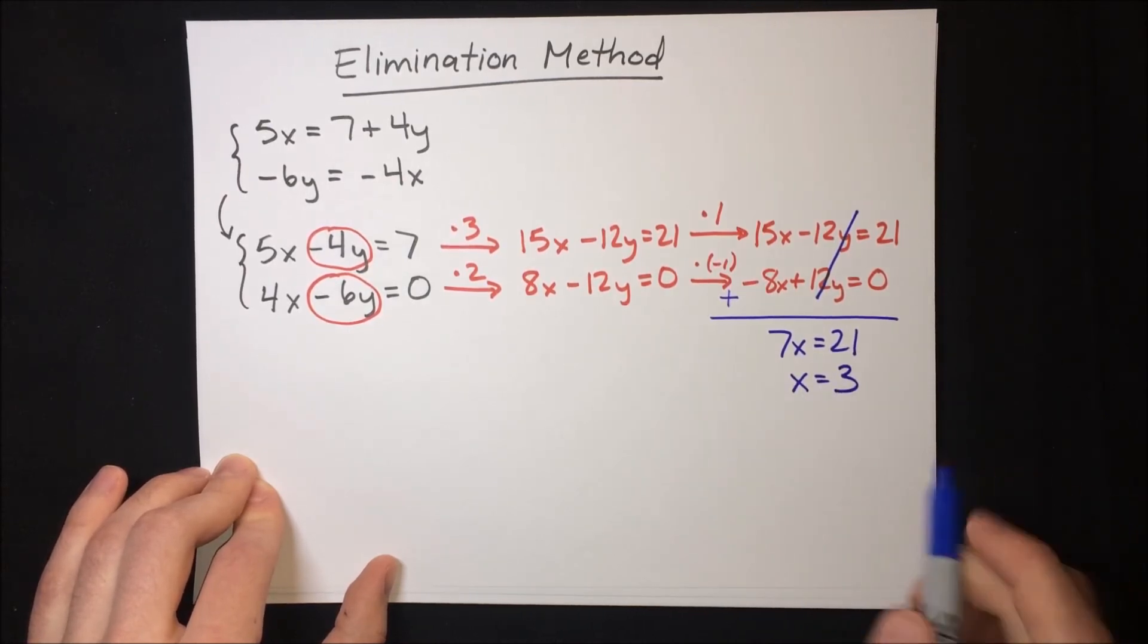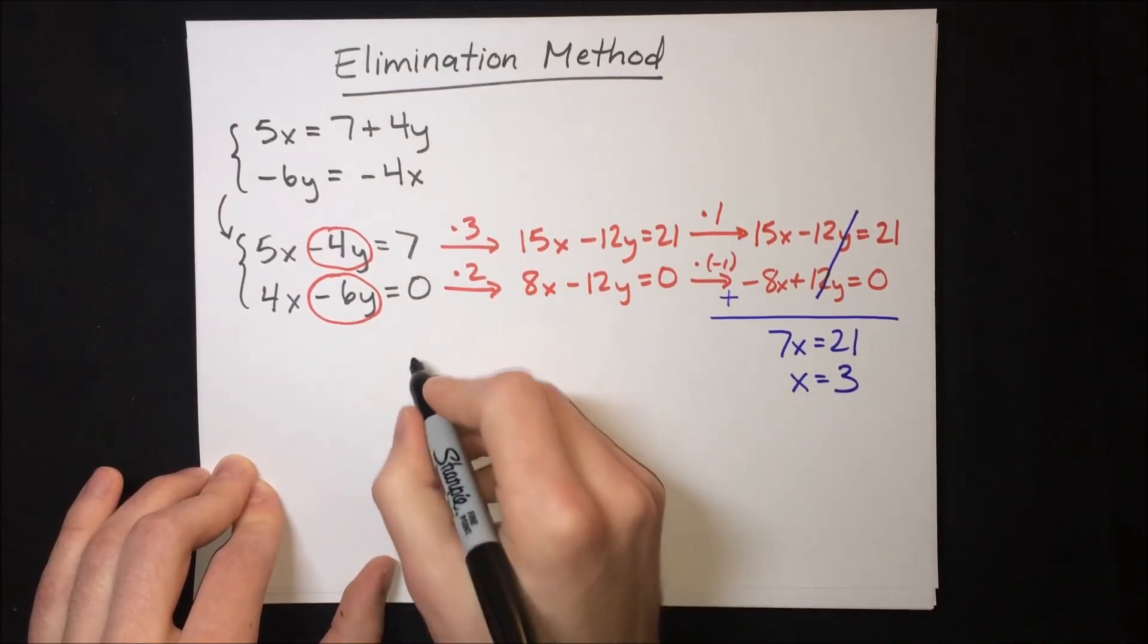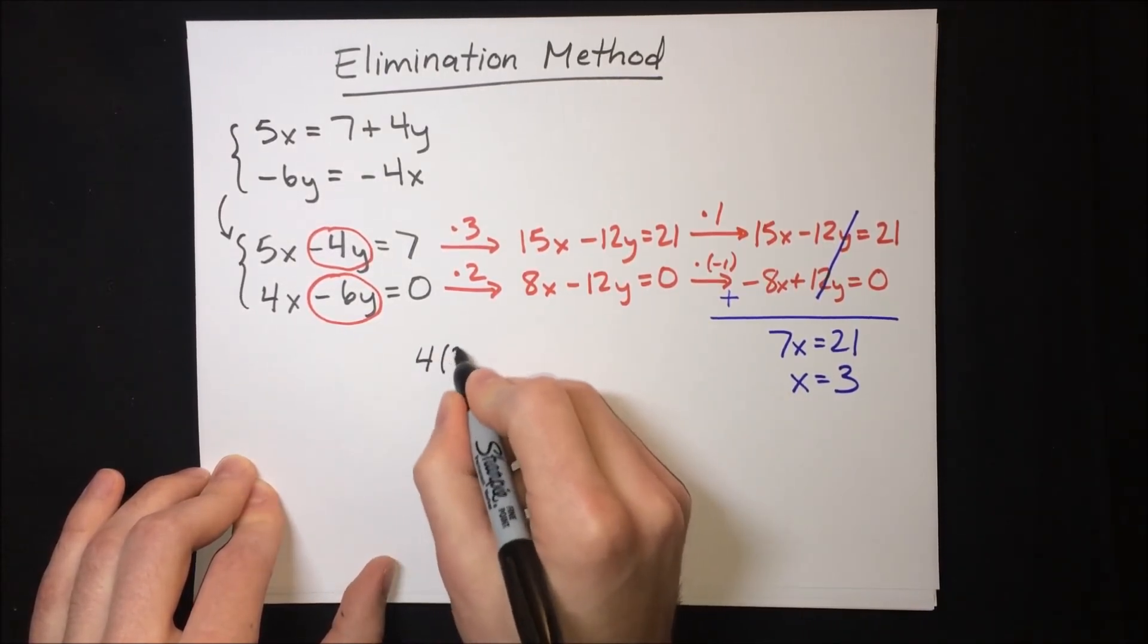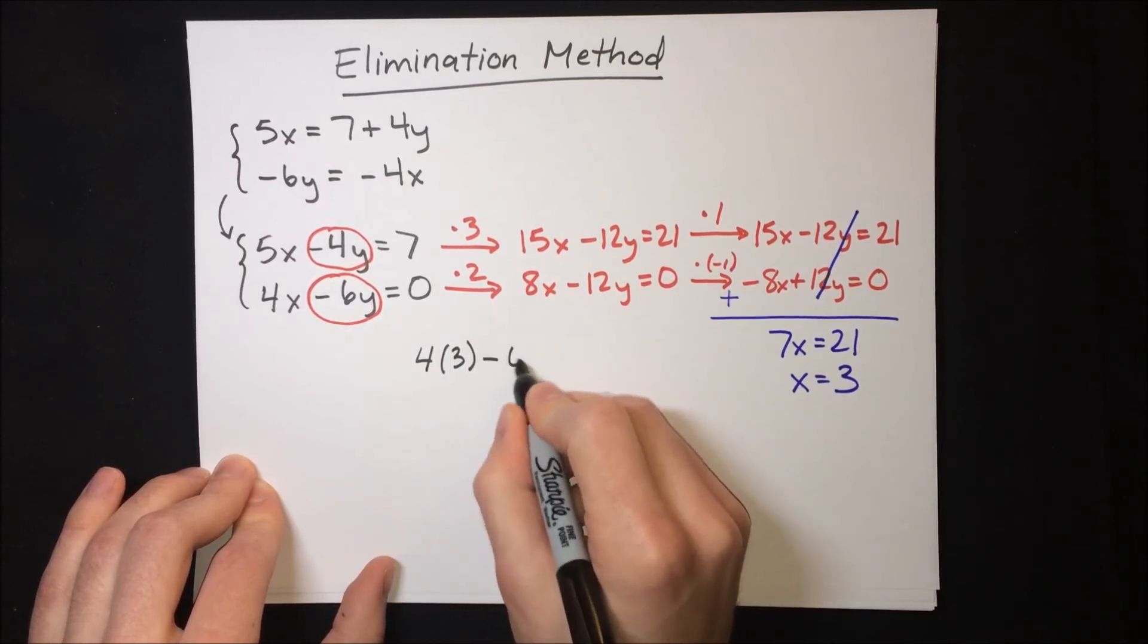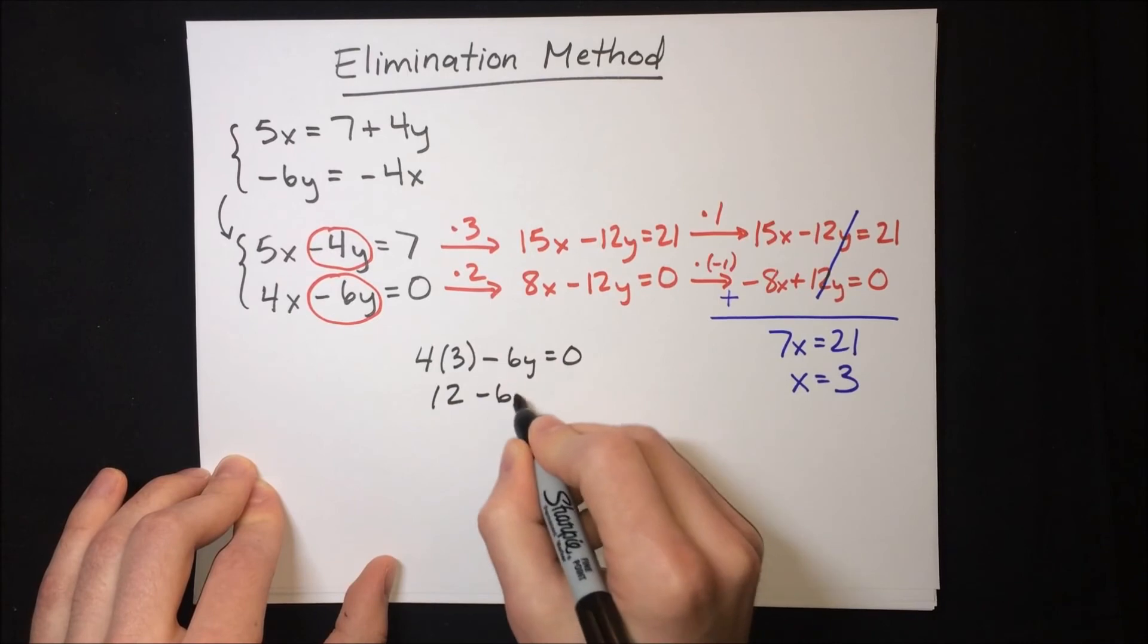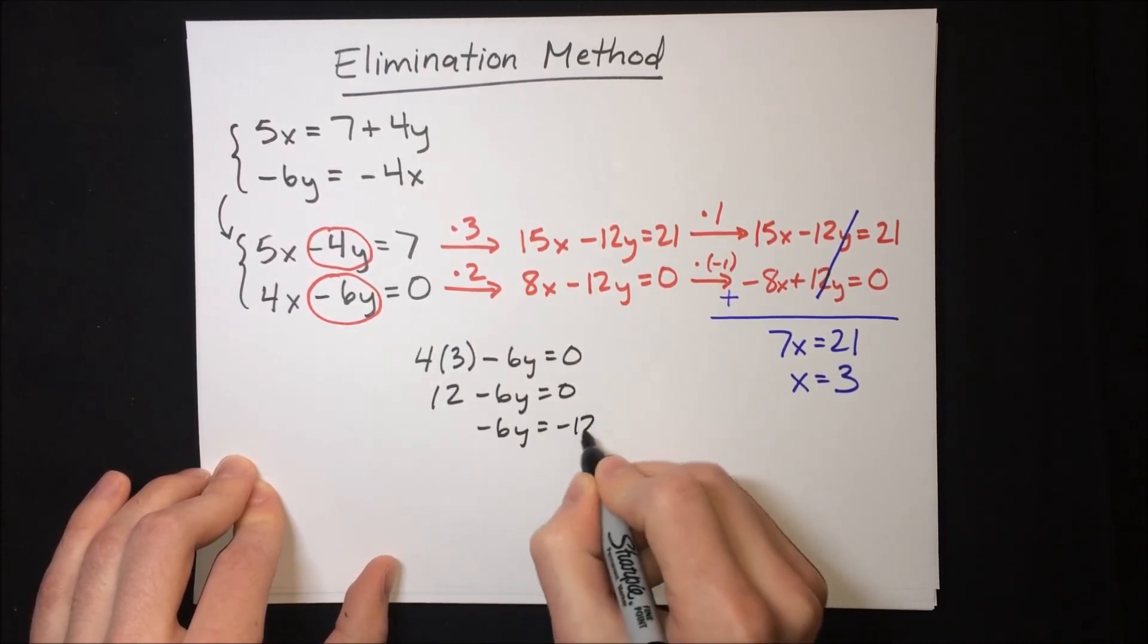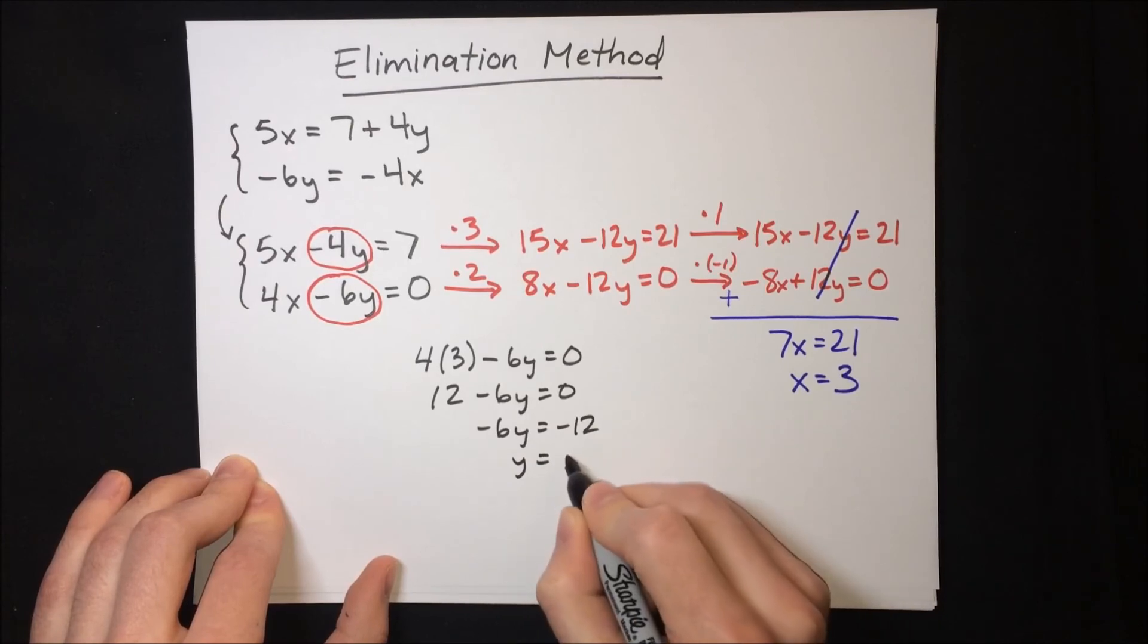And then we just have to substitute that back into one of the equations. Let's just take the bottom equation. So 4 times 3 minus 6y equals 0. 12 minus 6y equals 0. Negative 6y equals negative 12. Y equals 2.